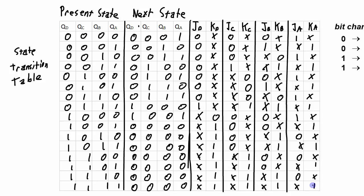We've finished the state transition table. The next set of steps is to take each one of these columns — JD, KD, JC, KC, JB, KB, JA, and KA — as individual outputs with the present state as the inputs, and create a Karnaugh map. Then from that Karnaugh map, come up with a logic expression for each one. So we'll have JD equals something, KD equals something, JC equals something, and KC equals something.